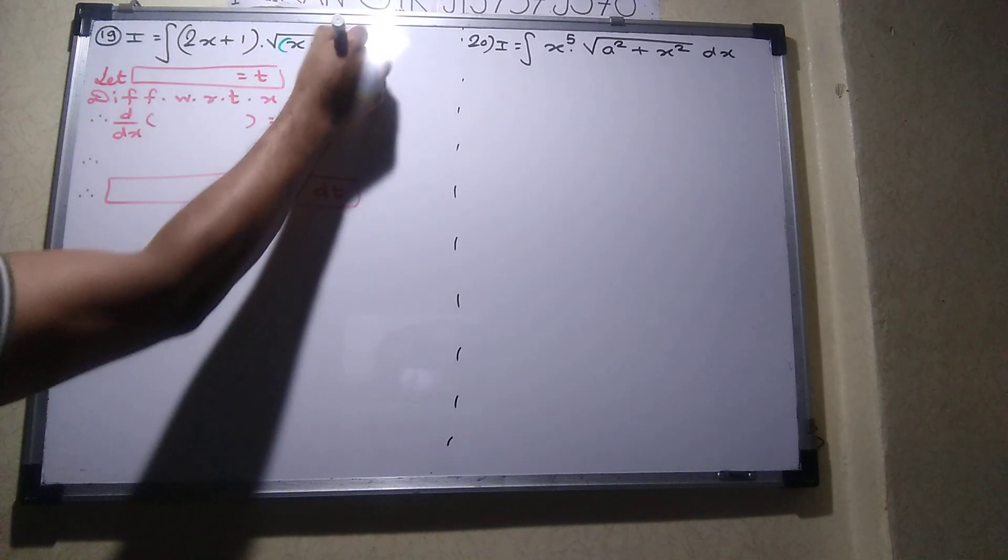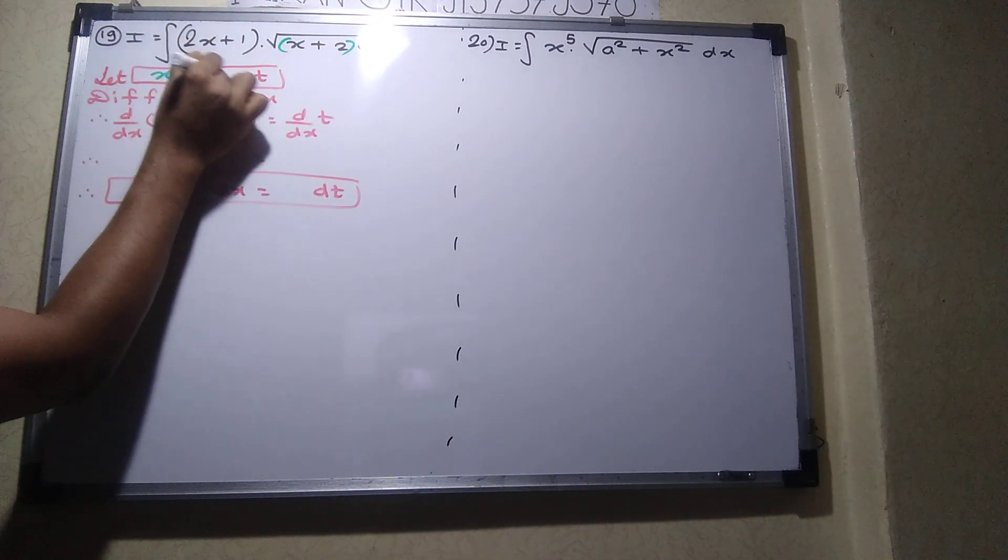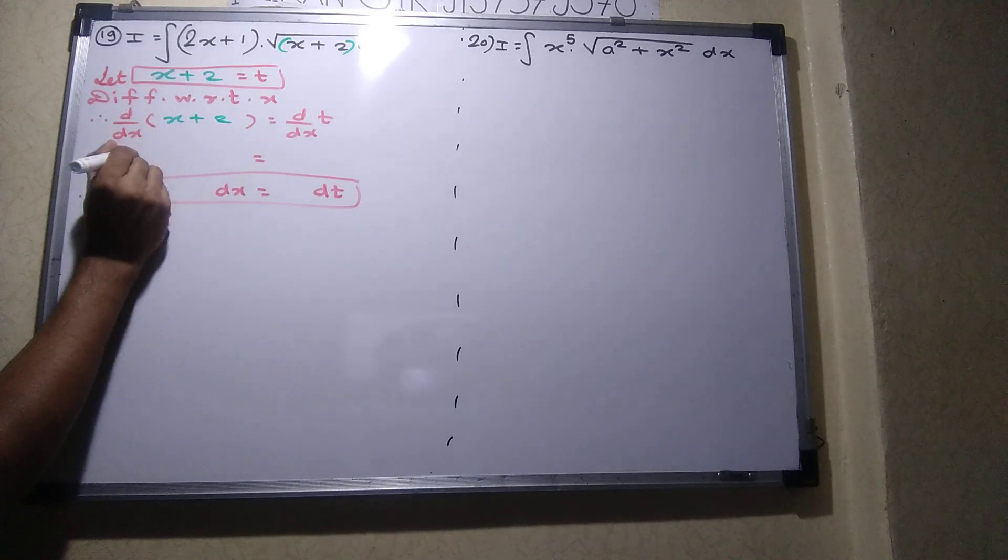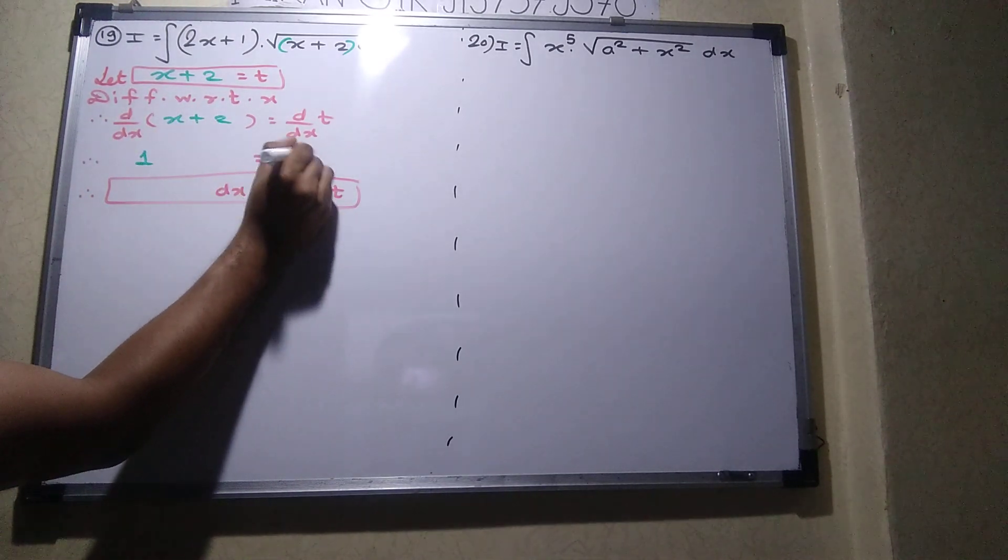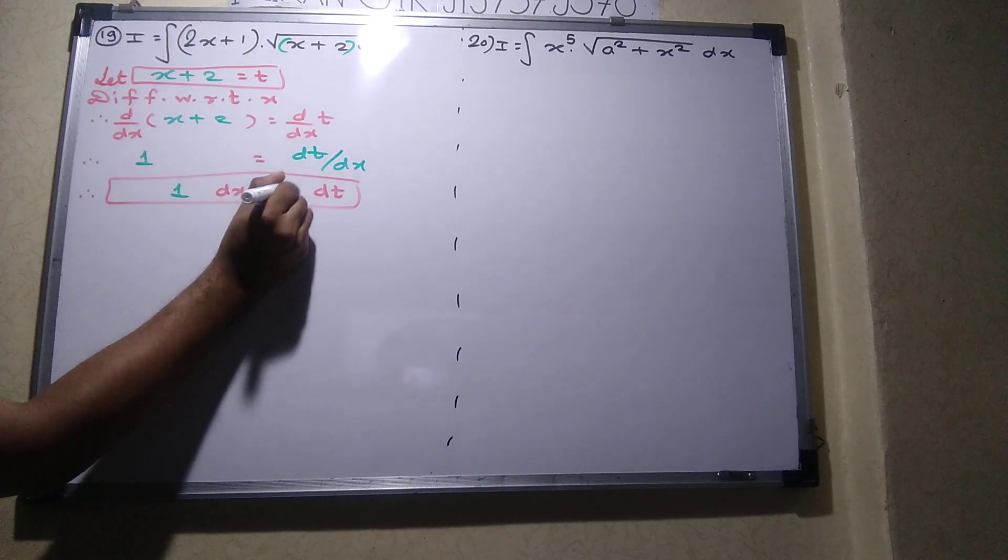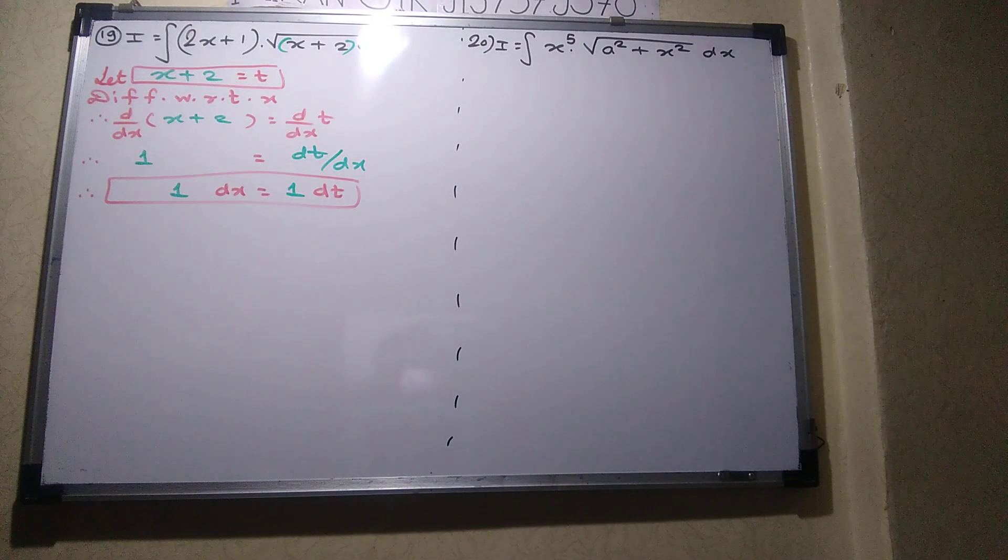I am going to take x plus 2 equals to T. Now you are asking, sir, where are the present? What is the derivative of x plus 2? 1. What happened? Dt upon dx, so I will say 1 into dx equals to 1, 1 into dt. It means dx equals to dt.